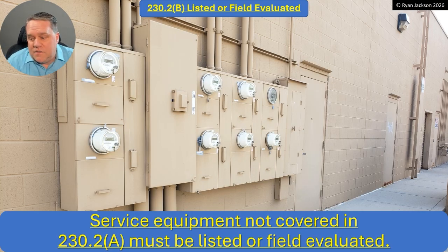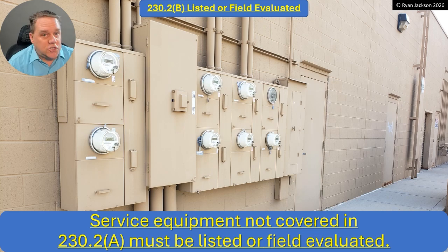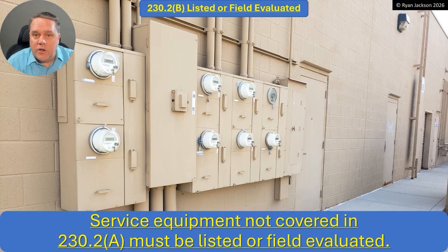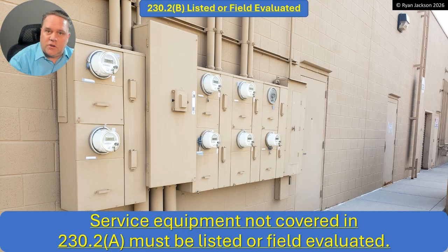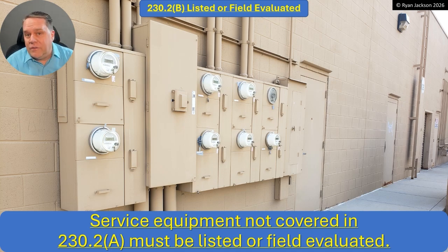I had to write them up. I said, sorry, guys — 230.66 says it has to be not only listed, but listed as suitable for use as service equipment, and it wasn't. They asked what they could do. I said you can install a switch upstream — a big 400-amp safety switch — or you could call a field evaluation body and have them come out and do a field evaluation. They'll have the product standards, they'll test things, and they can put the sticker that says 'suitable for use as service equipment' as the result of an on-site field evaluation. That's what it means: when I get it listed, I send the equipment to the testing laboratory; when I get it field evaluated, I have the field evaluation body come out and field evaluate it on-site.